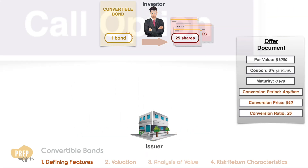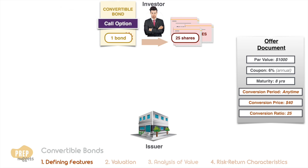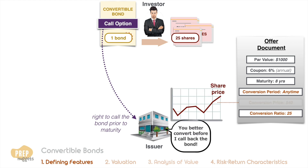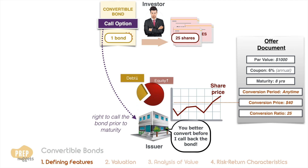Most convertible bonds are also callable, giving the issuer the right to call the bond prior to maturity. This can be a tool for issuers to force bondholders to convert when the value of their shares increases above the conversion price. The forced conversion strengthens the issuer's capital structure.